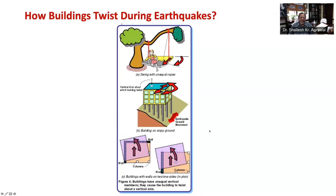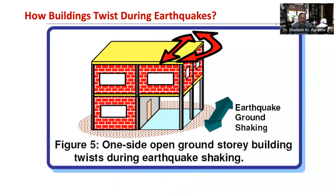It may be clear from these analogies that buildings having irregular shapes in plan tend to twist during an earthquake. Looking at figure 5, you can see a building with a propped overhang. This overhanging portion swings during shaking, causing twisting as well as horizontal displacement of floors.